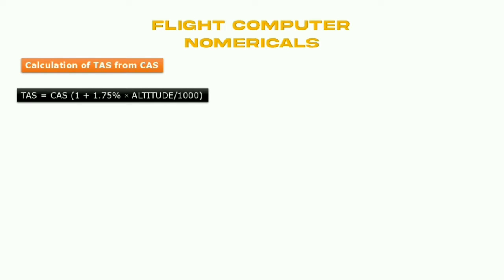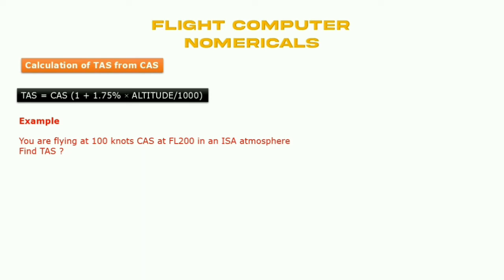The formula is: TAS = CAS × (1 + 1.75% × altitude / 1000). For example, if you are flying at 100 knots CAS at Flight Level 200 in International Standard Atmosphere, find the TAS. If you put in the values, the answer will be 135 knots. You can also use the flight calculator.